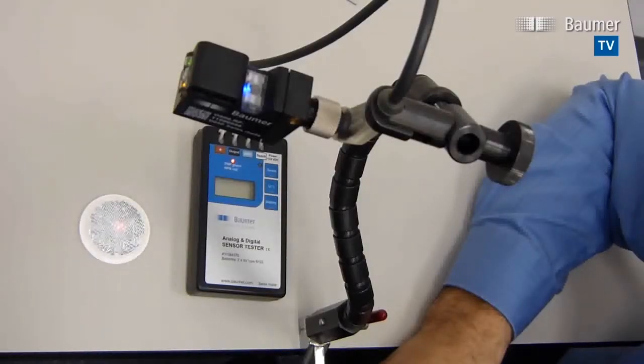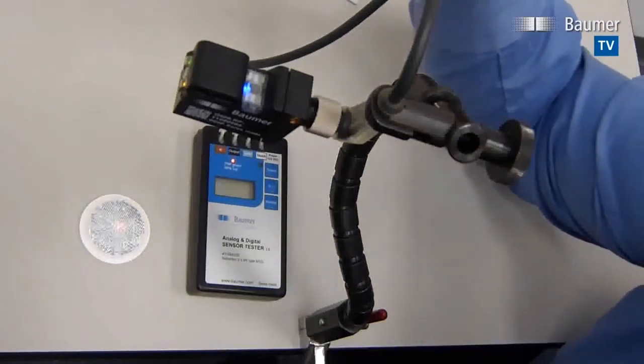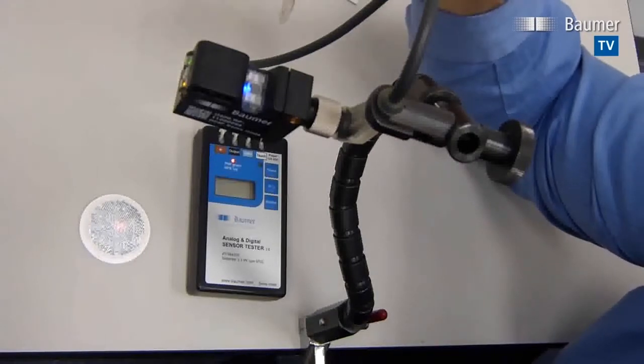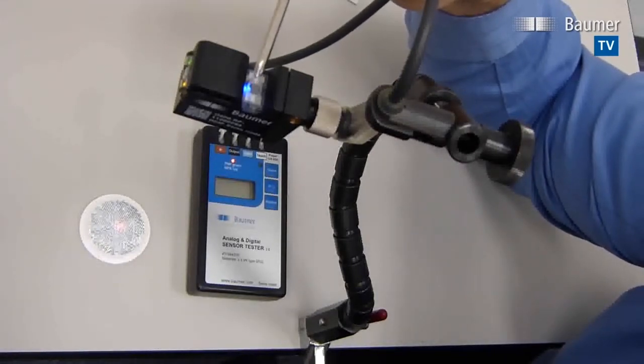This is the 0500RP Pinpoint Retroreflective Sensor from Baumer. Like other 0500 sensors, this sensor is taught using the QTeach function.